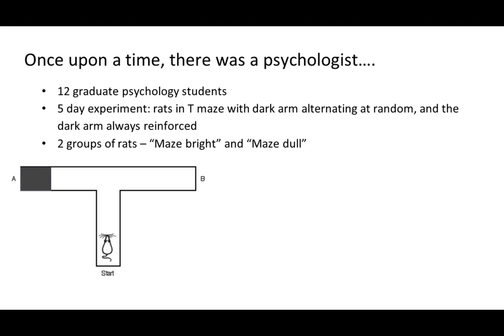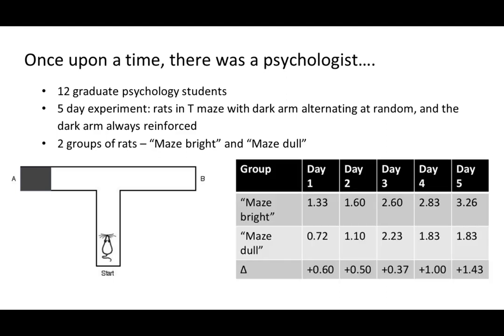He asked them to go ahead and do this five-day experiment. The arms were alternating — either the left or right were the dark arms. They were supposed to test how long it takes for the rats to run the maze. The average data for the five-day experiment showed that the maze bright rats were doing much better — they started off with a much better result, and that continued throughout the five days. Both groups are learning, but the maze bright animals are learning much faster.